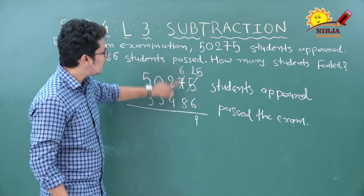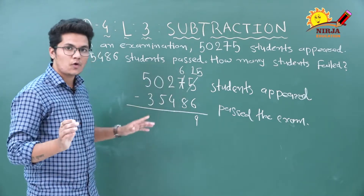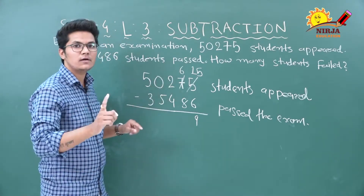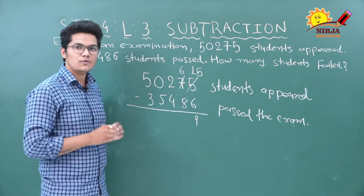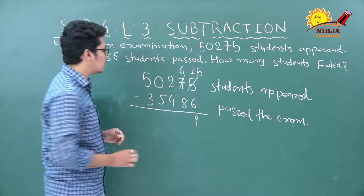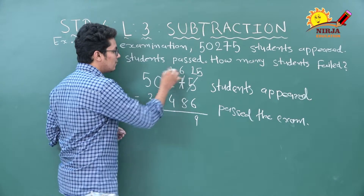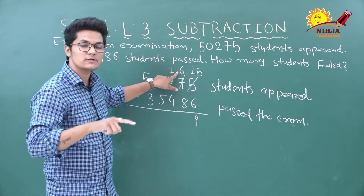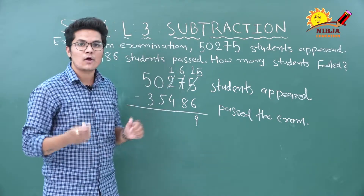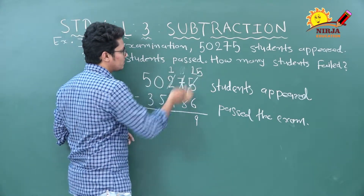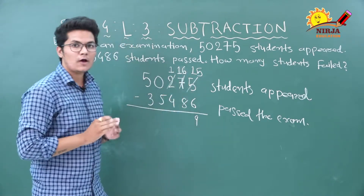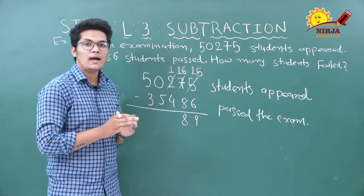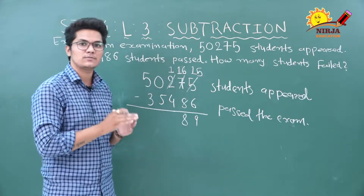There are 2 hundreds in the hundreds column. After borrowing 1 hundred, only 1 hundred remains. One hundred equals 10 tens, and there are already 6 tens, so we now have 16 tens. 16 minus 8 equals 8. Next, hundreds column: 1 minus 4 is not possible, so we need to borrow again.